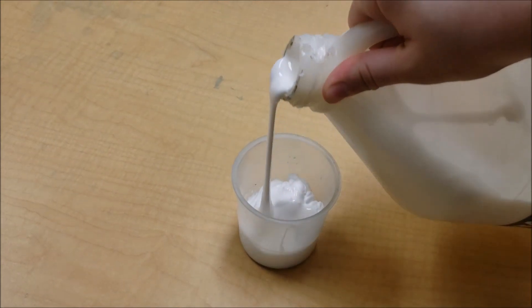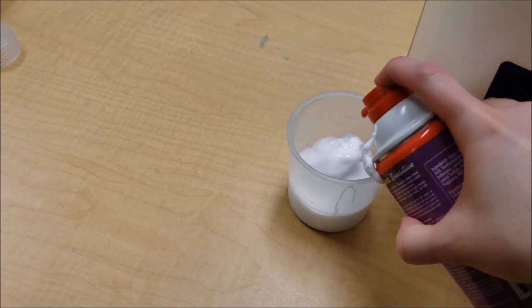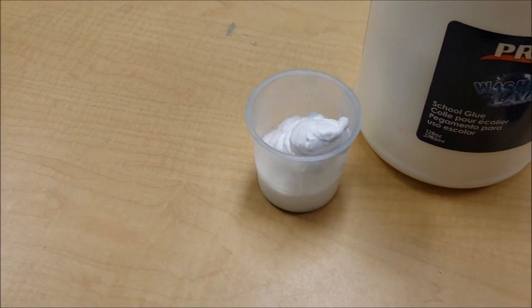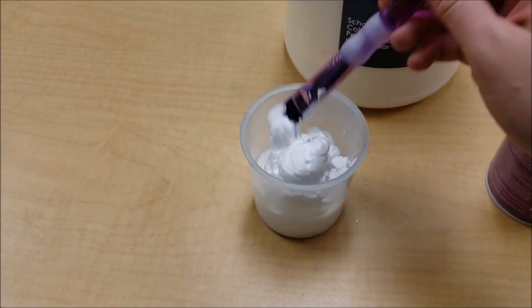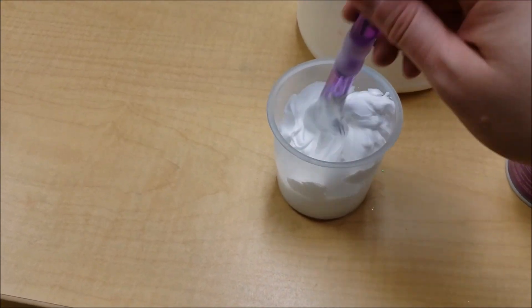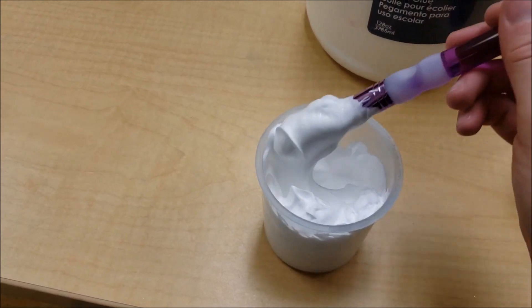As you can see, I'm not using an exact measurement. Generally you want to go for one part glue to one part shaving cream, but it really depends on the texture you want. More glue will give you a harder and more plastic texture, while less glue will give you a foamier, flakier, and lighter texture.